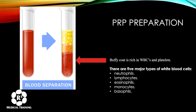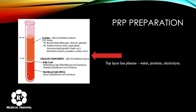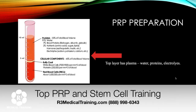The buffy coat is rich in white blood cells and platelets. There are five major types of white blood cells: neutrophils, lymphocytes, eosinophils, monocytes, and basophils — and it's important to understand the difference because some we want and some we don't. The top plasma layer contains water, proteins, amino acids, sugars, and hormones, so it's not useless — we do want a significant amount of it.